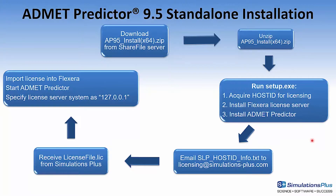The next step is to run setup.exe in the folder. This will acquire a host ID for licensing, install the Flexera licensing system, and also install Admet Predictor. Acquiring the host ID will create an slphostid_info.txt file on your desktop, and this should be mailed to licensing@simulations-plus.com. This information will be used to create a custom license file specific for your computer. We'll email that back to you, and then the final steps are simply importing this license into the Flexera graphical user interface.